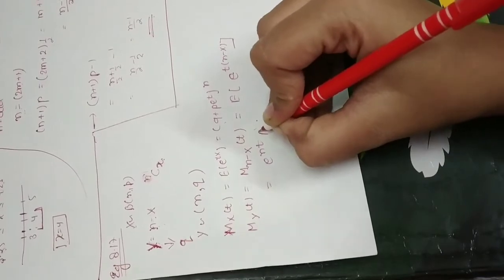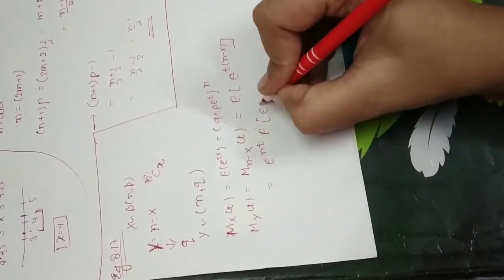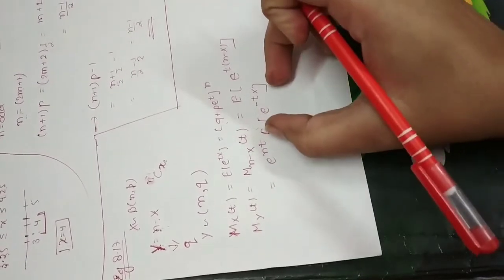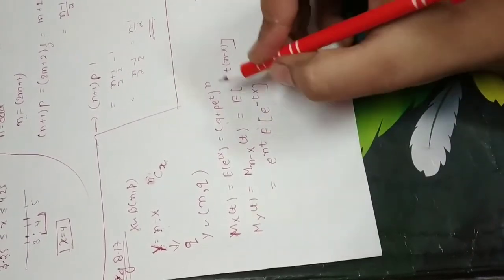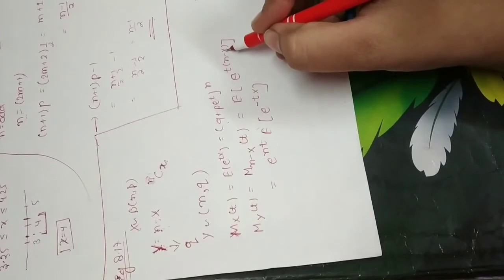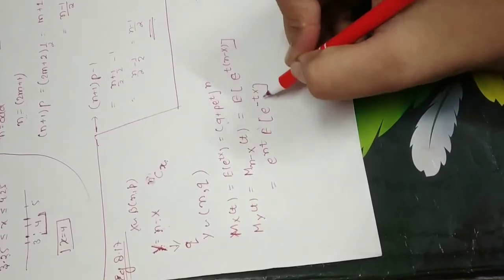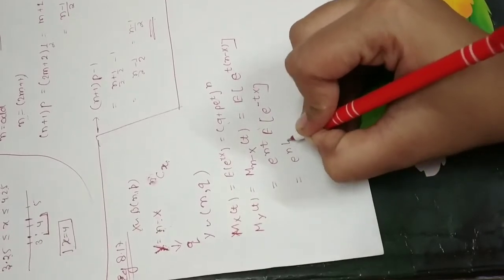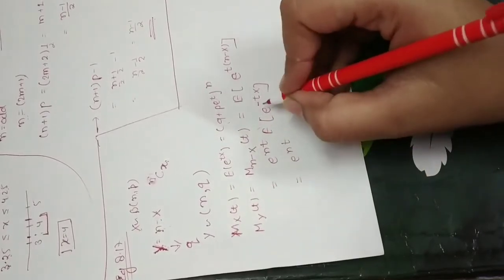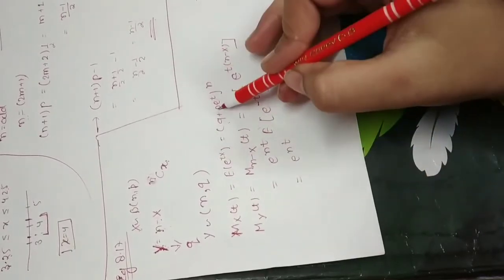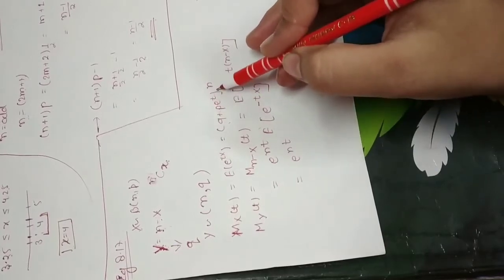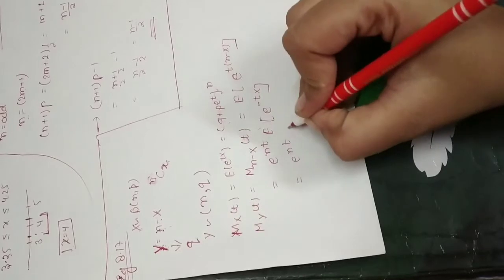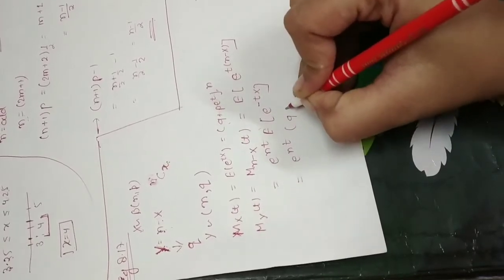Then expectation, what will happen here? Expectation e to the power minus tY. So we have this value as a constant because the expectation operates on the variable. We have taken the variable, so this will remain e to the power nt. Now we can compare it here. You can write the formula MGF. So yes, we can write it. This will be q plus p.